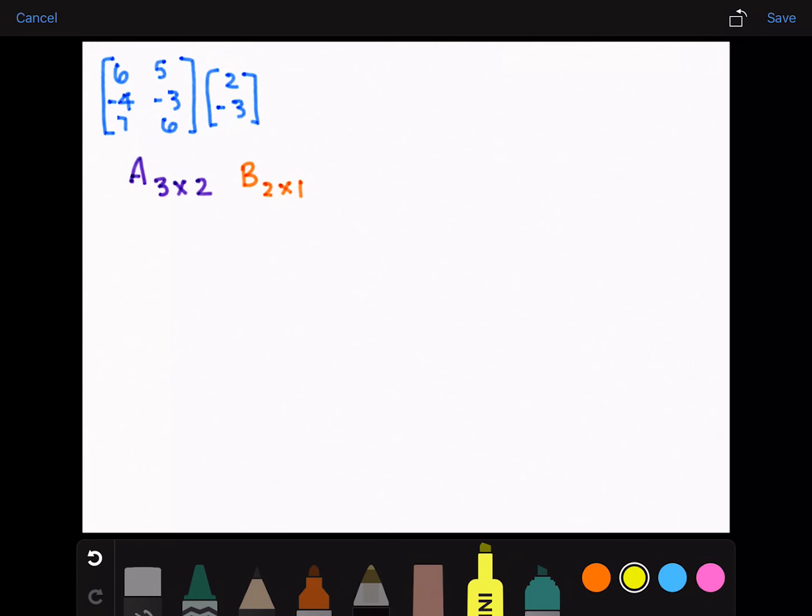To multiply any matrices together, these two inner terms must be the same number, and then your resulting matrix will have the dimensions of these two outer numbers. A times B will give us some matrix that has three rows and one column. So we'll put those blanks there.